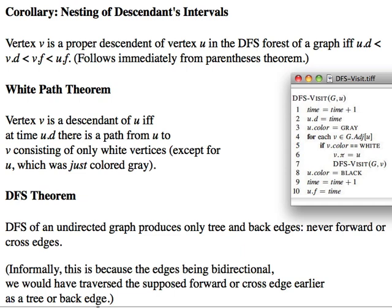An immediate corollary of that parentheses theorem is this nesting of descendants' intervals. That a vertex is a proper descendant of another vertex only if their time intervals are nested. The time interval of U's discovery and U's finishing has to wrap around the time interval of V's discovery and V's finishing.